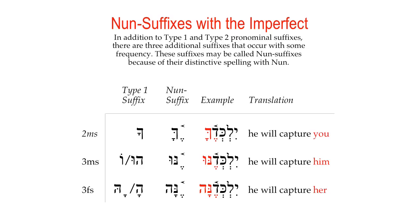In the 3MS and 3FS forms, you will see enu and ena, each containing a noon. However, in the 2MS category, echa, you'll observe that there's no noon in the spelling — but we call it a noon suffix because the noon has assimilated as a dagesh forte into the kaf. That dagesh forte represents an assimilated noon; it used to be something like encha. A noon loves to assimilate into the following consonant as a dagesh forte whenever the environment allows it. So you have to trust that this form is actually a noon suffix form.